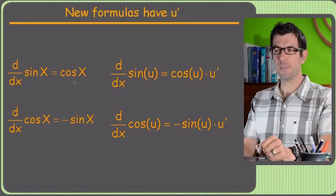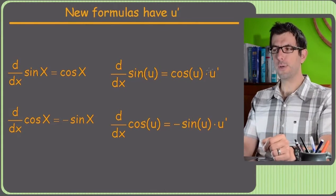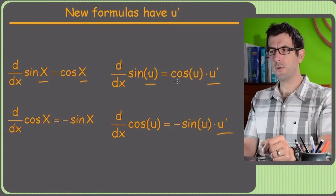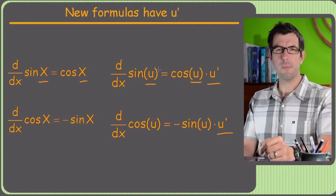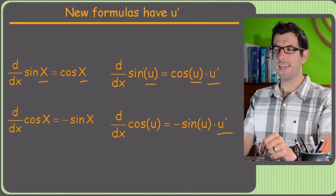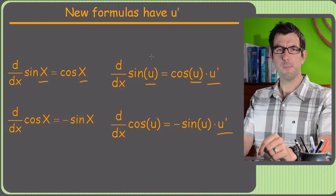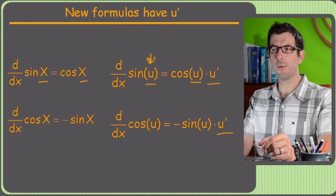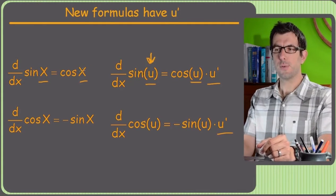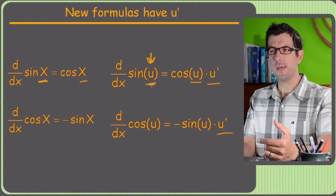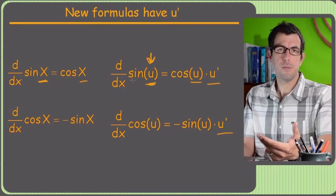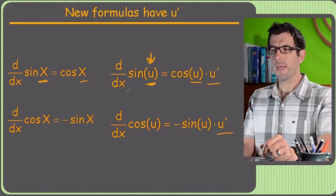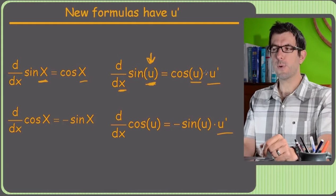As with all the other chain rule situations, all we're doing is adding a u-prime onto the end. They change this x to a u, but in calculus, whenever they talk about u, they always mean a function of x. U is pretty much always a function of some other letter. When they say x, they just mean x. When they say u, they mean it could be x squared plus 2, could be sine x — any function of x is being represented by u.